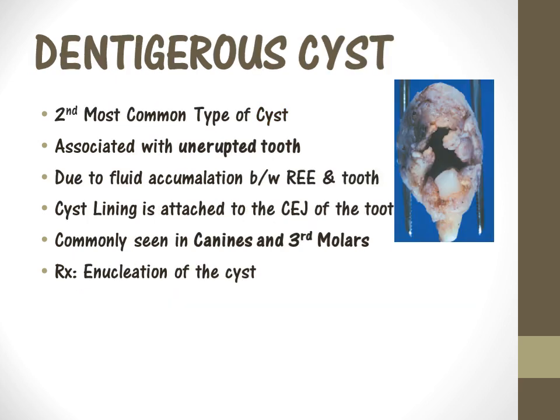The next cyst we are going to be talking about would be dentigerous cyst. This is the second most common type of cyst — the first most common is the radicular cyst. The unique feature about a dentigerous cyst is that it is always associated with an unerupted tooth. This cyst forms usually from the CEJ, covering from the mesial CEJ to the distal CEJ. During eruption, the tooth is covered with something called reduced enamel epithelium. When fluid accumulates between the tooth and the reduced enamel epithelium, this dentigerous cyst forms.